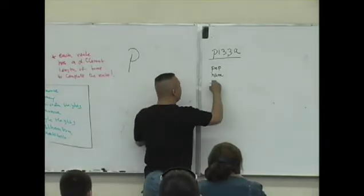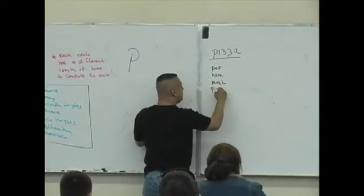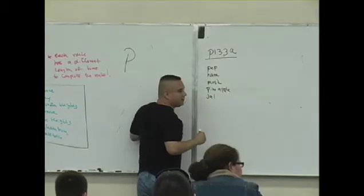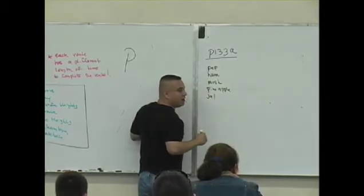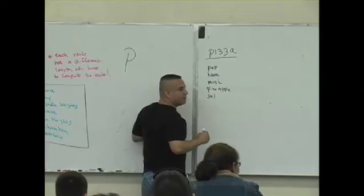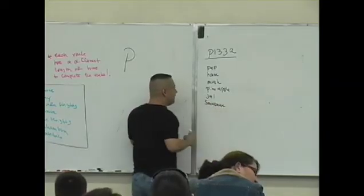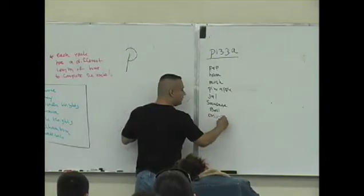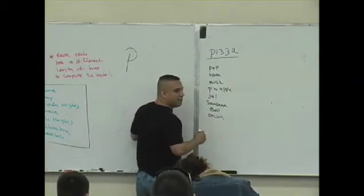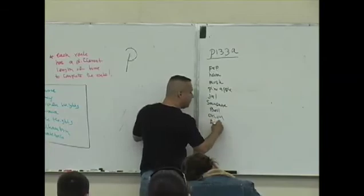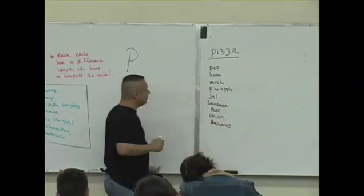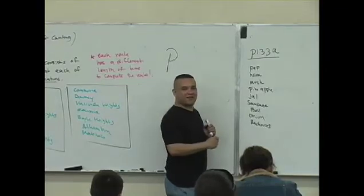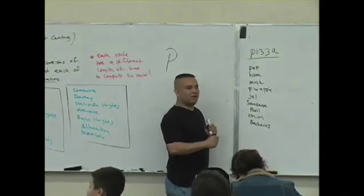Pepperoni. So we can put pepperoni, we can put ham. What are some other options that we have on a pizza? Mushroom, what else? Pineapple, is that right? What else? Sausage. Anything else? Salad, pepper - you guys don't put onion on your pizza? Onion? Anybody put anchovies? What else?